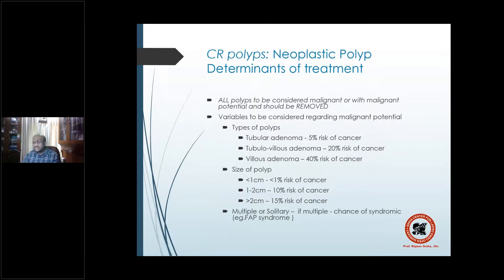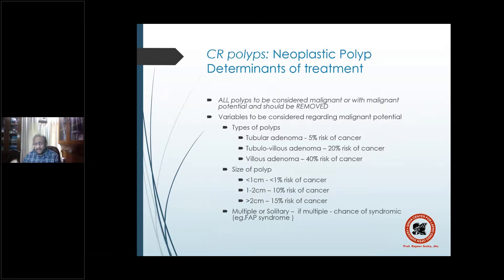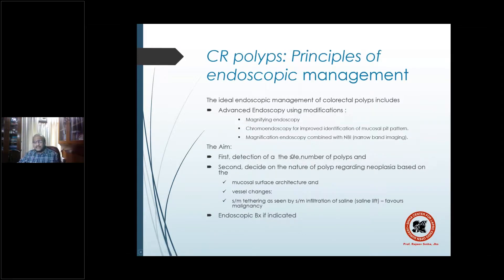To target the 5 to 10% who have either a chance of later malignant development or a currently malignant polyp, all polyps must be removed with proper histopathological examination. Variables to consider whether a polyp is malignant include: size (1 cm threshold), multiplicity, macroscopic appearance, and histological type.